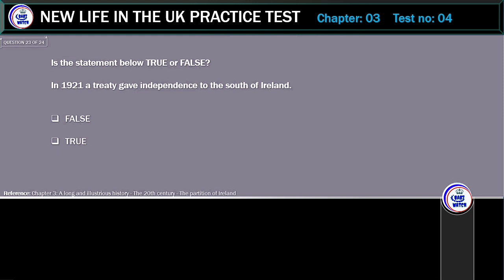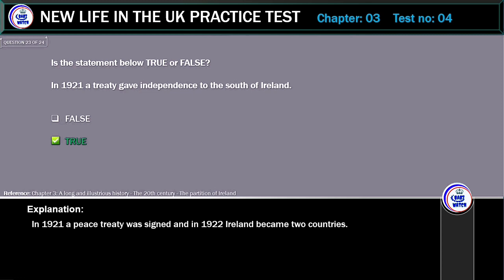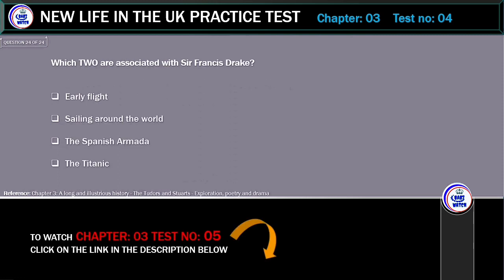Is the statement below true or false? In 1921 a treaty gave independence to the south of Ireland. The correct answer is True. In 1921 a peace treaty was signed, and in 1922 Ireland became two countries.